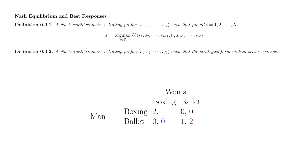If the man plays ballet and the woman responds boxing, she receives payoff 0 in blue. If she responds ballet, she receives payoff 2 in red. The woman prefers 2 to 0, so her best response to the man playing ballet is to play ballet herself. We'll underline the 2 to record this information.